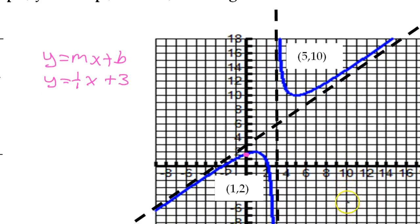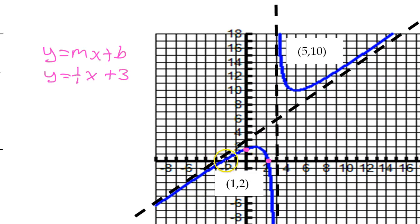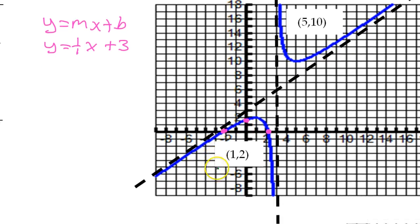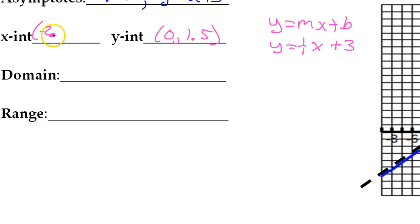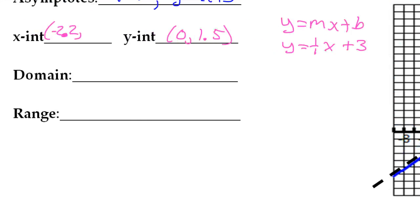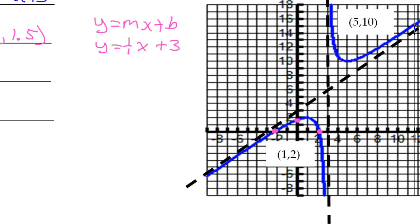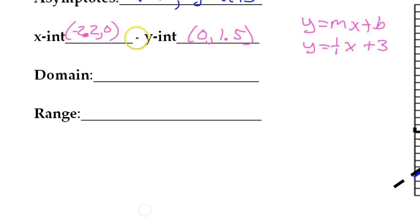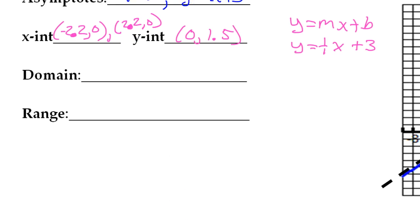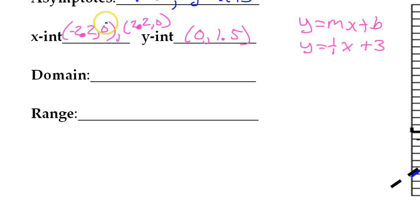Now for the x-intercepts — there are two, because the function crosses the x-axis in two places. This looks close to negative 2, maybe a little to the left, so I'll say negative 2.2. So that gives (-2.2, 0). Then there's another one a little to the right of 2, so positive 2.2, giving (2.2, 0). If you said negative 2.3 or 2.4, that would be acceptable too.